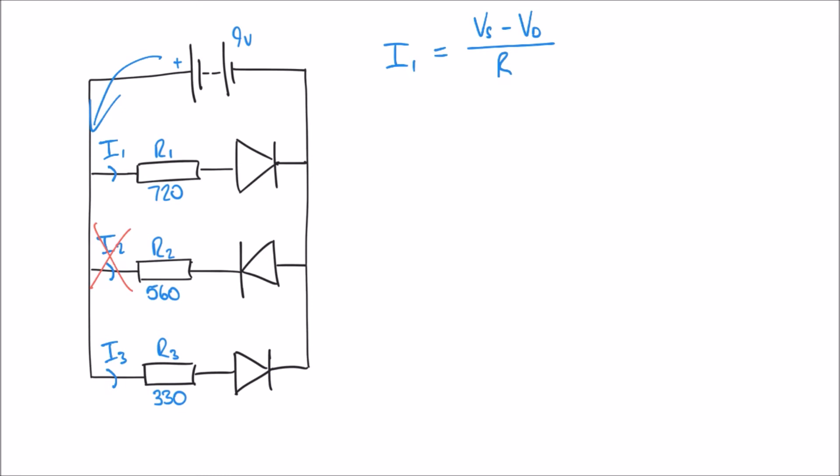By putting some values in, we can say that Vs is 9 volts minus 0.7, which we're assuming is dropped across the diode, divided by R, which in this top branch is 720 ohms. If I calculate that, I get an answer of 11.53 times 10 to the minus 3, or better expressed as 11.53 milliamps.